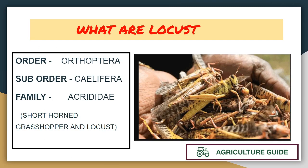Today we are going to discuss about the insects that have caused havoc in the country. So what are locusts? In general, Hindi mein Tiddi ki naam se jane jate hain. In classification, its order is Orthoptera, suborder Caelifera, and the most important family is Acrididae. In the Acrididae family, short-horned grasshoppers and locusts are included.